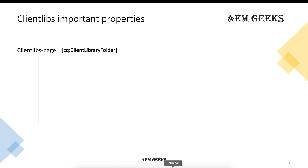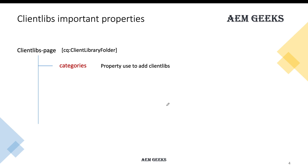Let's look at a few important properties of your client library. Your client library should have two or three important properties. The first is 'categories' — the value you give in this property will be used to load or call your client library. Without this, your client library is of no use.